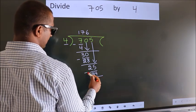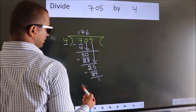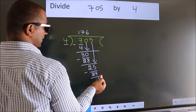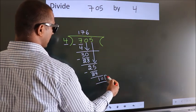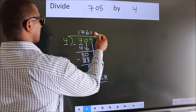Now we subtract, we get 1. No more numbers to bring it down. So we stop here. This is our remainder. This is our quotient.